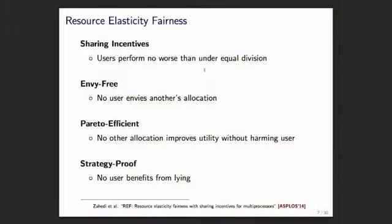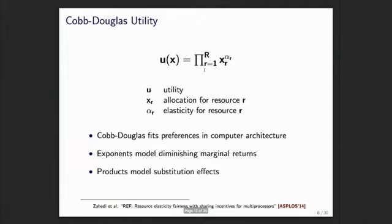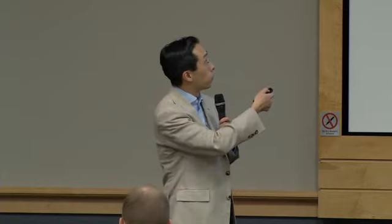Finally, we want strategy-proofness: no user can benefit from lying about what they want from the system. The allocation mechanism we'll discuss guarantees each of these four properties. At the root of this mechanism is the Cobb-Douglas utility model, where utility or performance is expressed as a product of exponentiated allocations. U could be IPC or task throughput; X is the resource allocation like cache or bandwidth, raised to some power alpha and multiplied together.